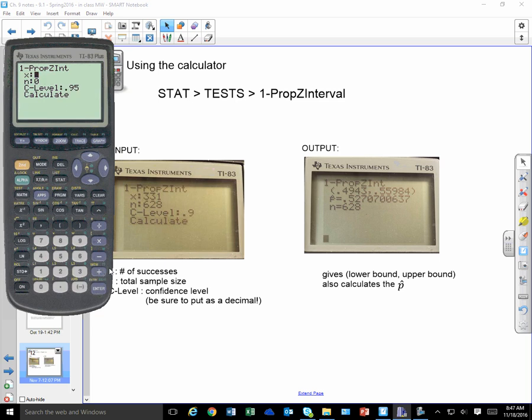You're going to put in your x, which is your number of successes or the number of people that were in the category that you were interested in. And so for our example, it was 331. N is our total sample size. Our confidence level is the C level. If you want a 90% confidence interval, you'd put in 0.90. For 95, you put 0.95. So just make sure you convert that percentage into a decimal. And then you calculate, and you get the lower bound and the upper bound for your interval.